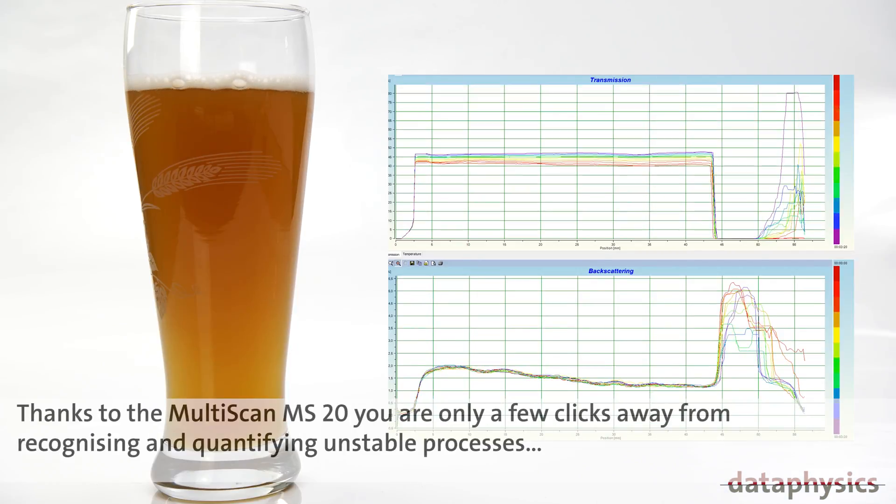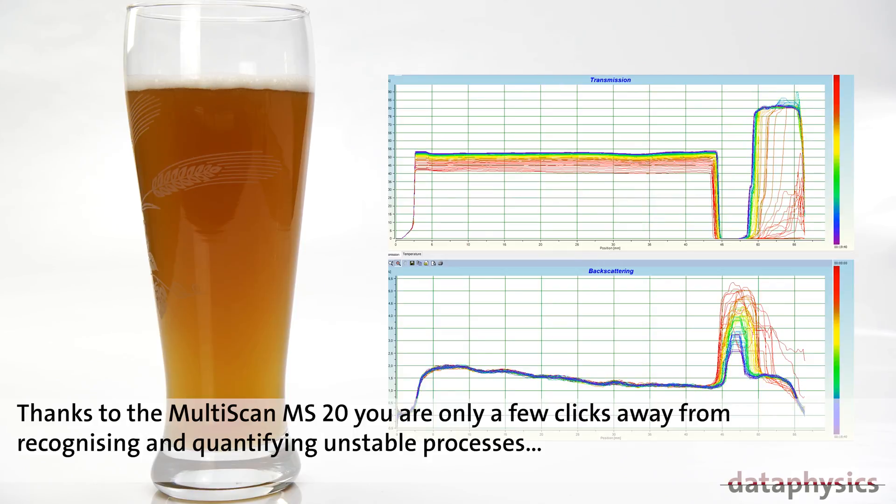Thanks to the MultiScan MS20, you are only a few clicks away from recognizing and quantifying unstable processes such as coalescence, coagulation, flocculation, sedimentation, and creaming.